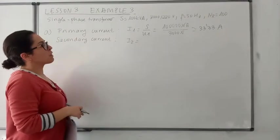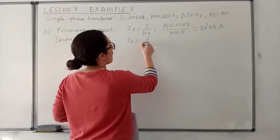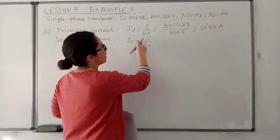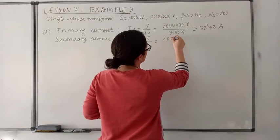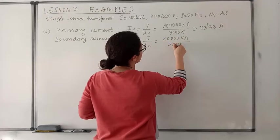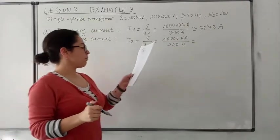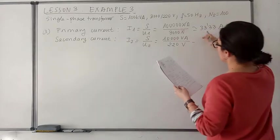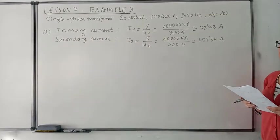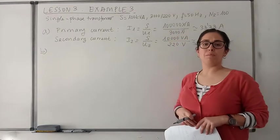For obtaining the secondary current you have to divide the apparent power of the transformer by the voltage in the secondary winding. So that is 100,000 VA divided by 220 V, which is the voltage in the secondary winding. So these are the currents in the primary and secondary windings.